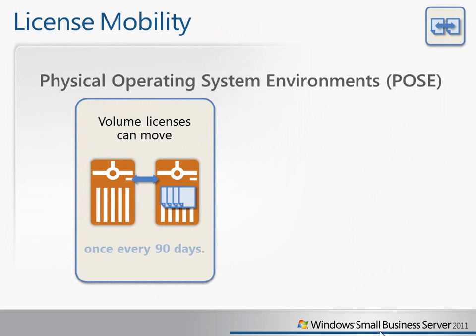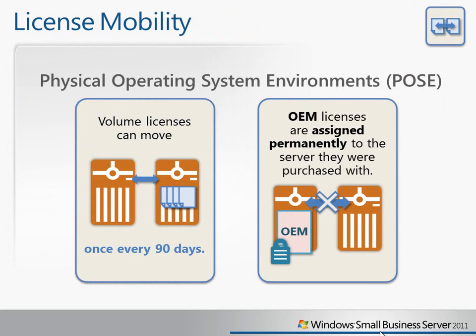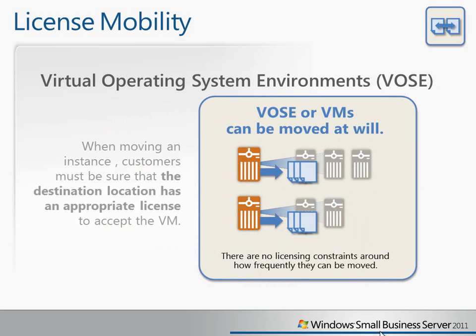Regarding licensing mobility: when you install and run on a physical operating system environment, for volume licenses you can move that license assignment once every 90 days to new hardware. For OEM licenses, those are assigned permanently to the server with which they were purchased, so you cannot move them to different hardware. For virtual operating system environments, there are no licensing constraints on how frequently you can move VMs, but the destination must have an appropriate license to accept the VM.